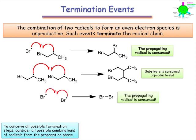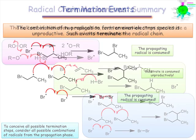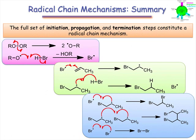These three steps represent all the possible combinations of radical intermediates with one another, and represent the full termination phase of radical hydrobromination. This final slide is a summary of the radical chain mechanism we've discussed in the last two webcasts. The full set of initiation, propagation, and termination steps constitute a radical mechanism.